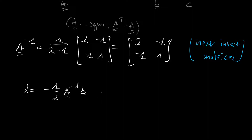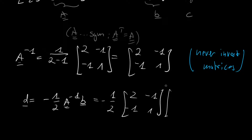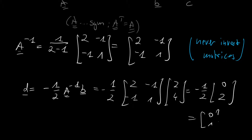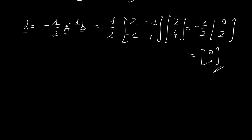Now we calculate vector d equals minus one half A inverse times b. Plugging in: minus one half times matrix 2 minus 1 minus 1 1 times vector 2 4. The matrix-vector product gives: 2 times 2 minus 1 times 4 equals 0 for the first component, and minus 1 times 2 plus 1 times 4 equals 2 for the second. Dividing by 2 and applying the minus sign gives d equals 0 negative 1.